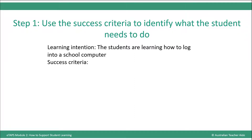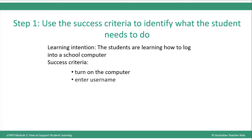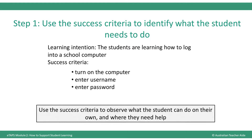The students are learning how to log into a school computer. What would be three success criteria they need to achieve to be successful? The student must be able to turn on the computer, enter their username, and enter their password. You can now use these criteria to observe what the student can do on their own and where they need help.